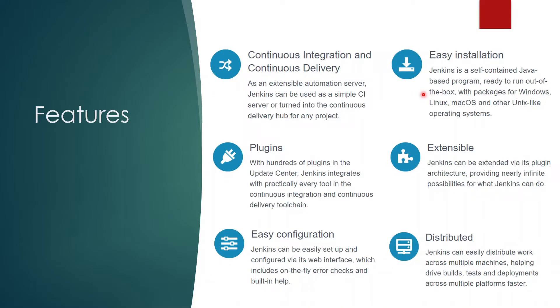Now let's talk about Jenkins features, which are really essential for CI/CD in today's world. First is continuous integration and continuous delivery — as an extensible automation server, Jenkins can be used as a simple CI server or turned into a continuous delivery hub for any project. Second is ease of installation: Jenkins is very easy to install. It's a self-contained Java-based program — just download and install the exe on Windows, or the appropriate package for Linux, Mac OS, or other environments.